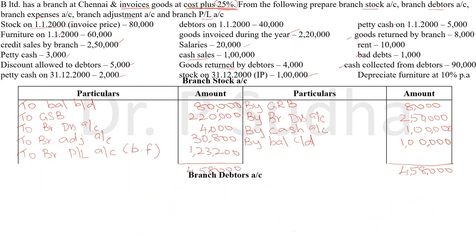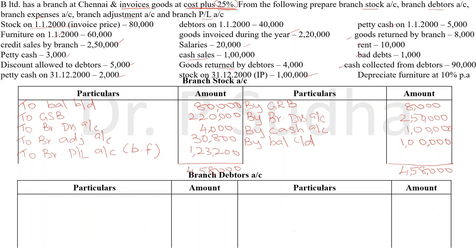The next account we will prepare is branch debtors account. Branch debtors is also an asset — if the value increases we debit, if it decreases we credit, and the opening balance is written on the debit side as balance brought down. The opening balance is 40,000 rupees. Petty cash, furniture, goods invoiced, and goods returned by branch will not affect the debtors account. For credit sales, when the branch makes credit sales the value of debtors increases, so we debit credit sales: 2,50,000.